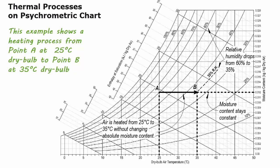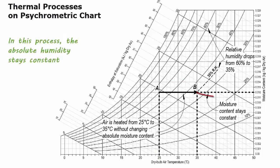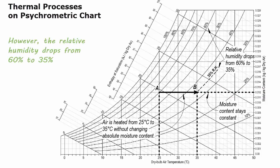This example shows a heating process from point A at 25 degrees C dry bulb to point B at 35 degrees C dry bulb. In this process, the absolute humidity stays constant. However, the relative humidity drops from 60% to 35%.